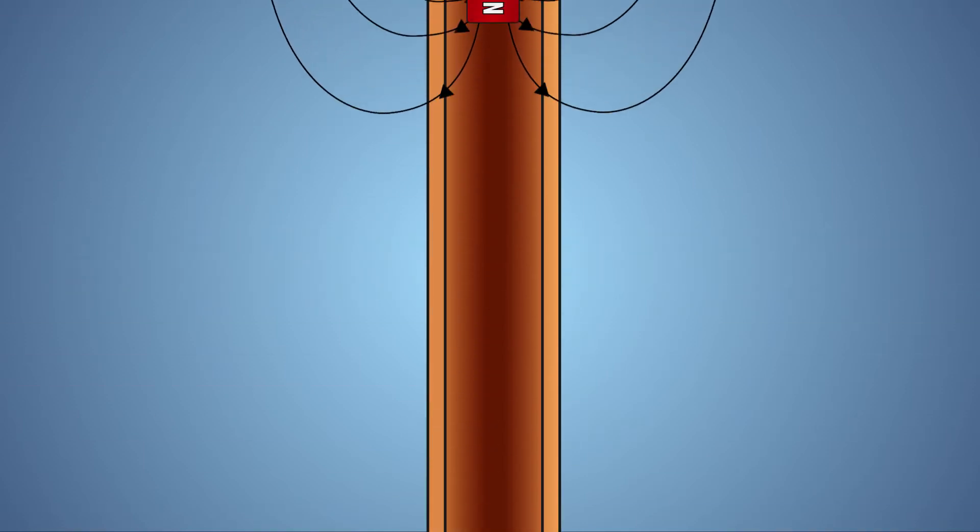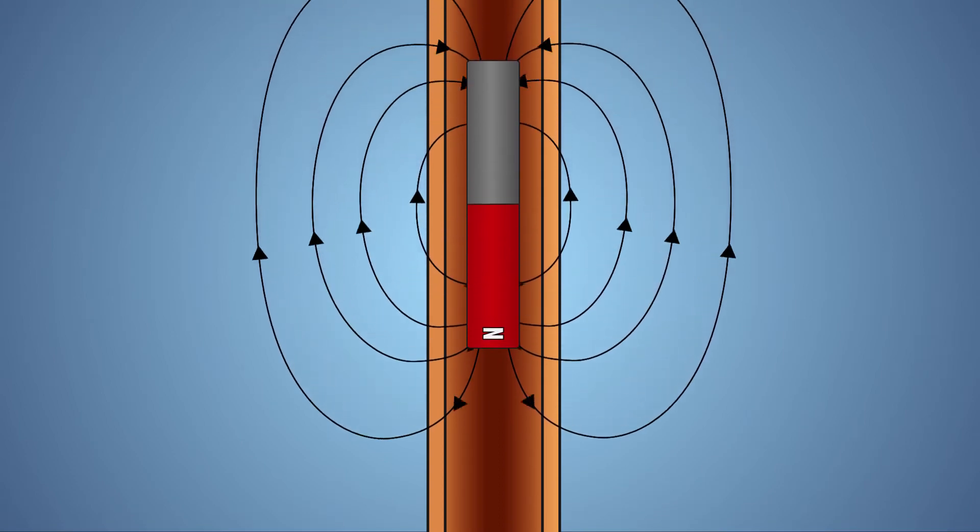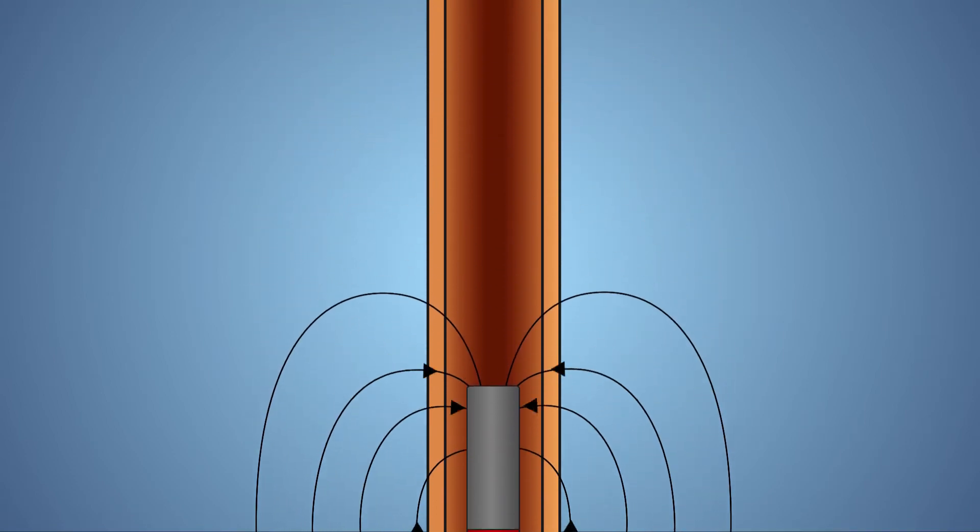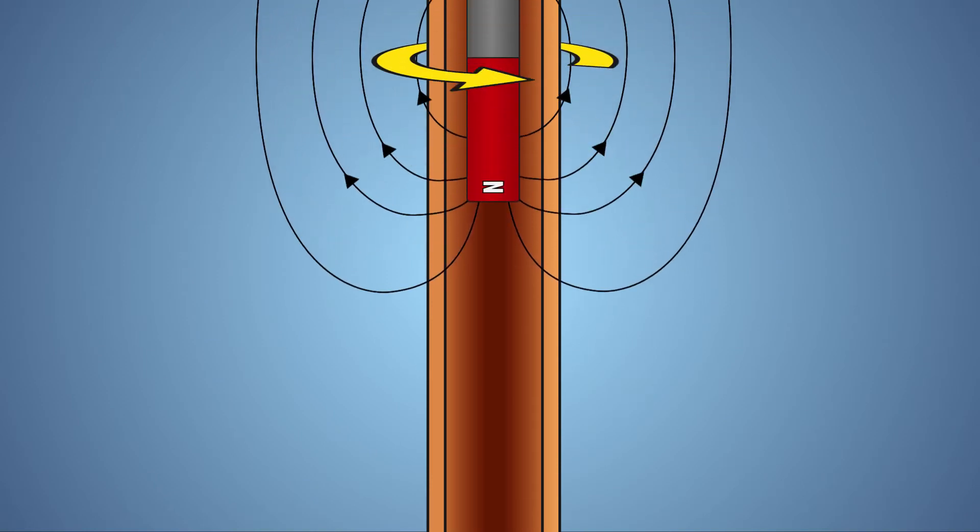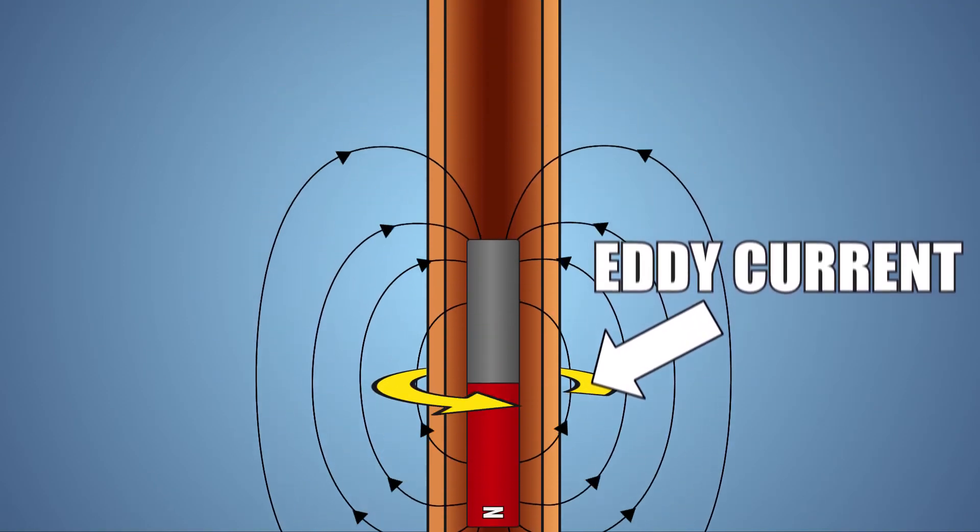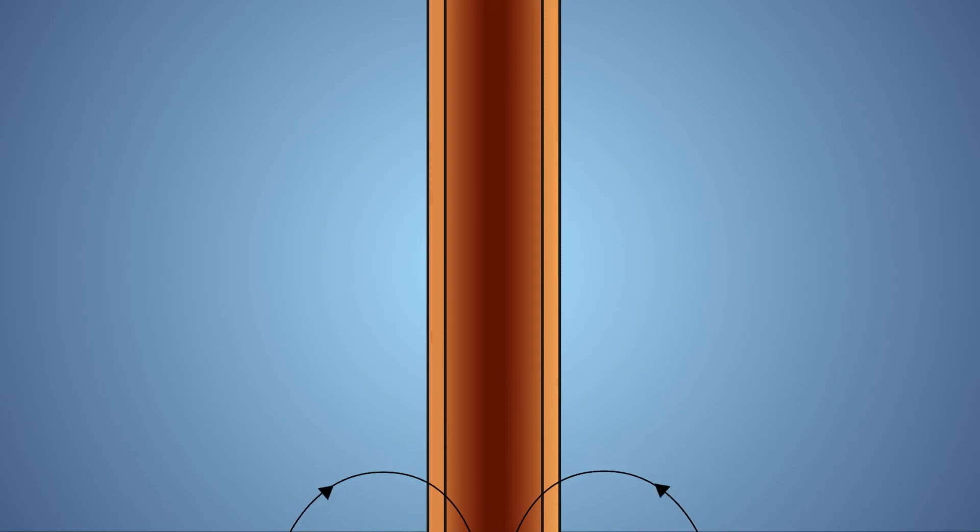When the magnet is dropped down the conductive copper tube, we are exposing the walls of the tube to a changing magnetic field, which is generated by the falling magnet. This changing magnetic field of our magnet generates an electrical current known as an eddy current in the walls of our tube.